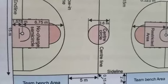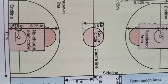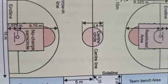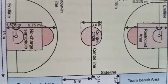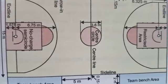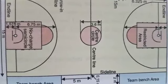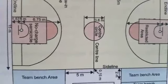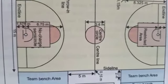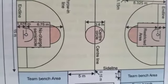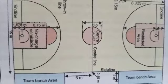In basketball, two teams of five players each try to score points by tossing the ball into the opposing team's basket. They may use only their hands to control the ball and are not allowed to run while holding it.